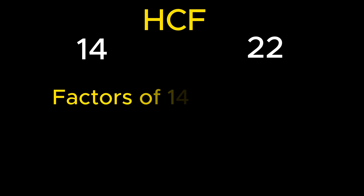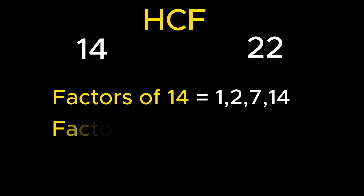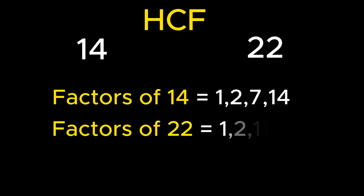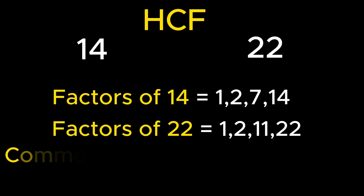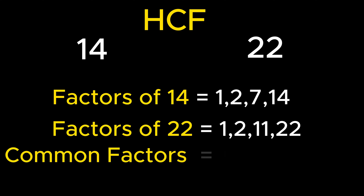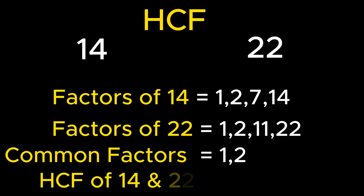Let's understand this with an example. Consider 14 and 22 as the numbers whose HCF needs to be determined. The factors of 14 are 1, 2, 7, and 14. Similarly, the factors of 22 are 1, 2, 11, and 22. The common factors are 1 and 2. Since 2 is the largest among the common factors, the HCF of 14 and 22 is 2.